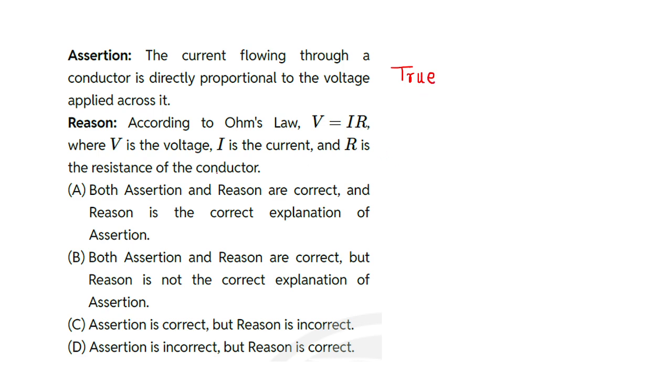The current flowing through a conductor is directly proportional to the potential difference applied across its end. That is what is being stated in Ohm's law. Now let us read the reason statement. According to Ohm's law, V is equal